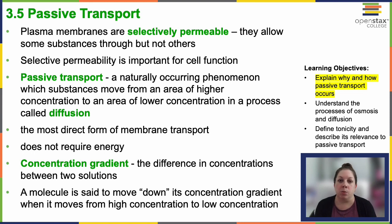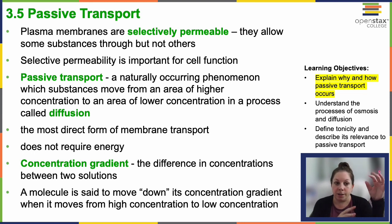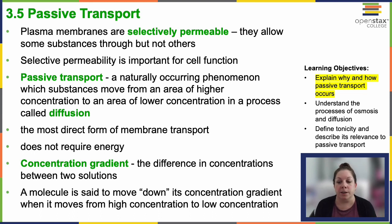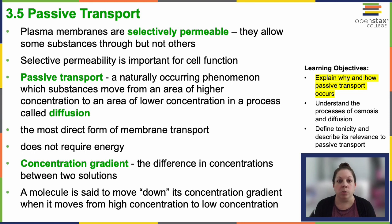Passive transport is a naturally occurring phenomenon which allows substances to move from areas of higher concentration — where there's lots of something — towards areas of lower concentration. This process is called diffusion. It's the most direct form of membrane transport: simple, doesn't require any energy. The only required thing is a concentration gradient — a difference in concentrations between two solutions.